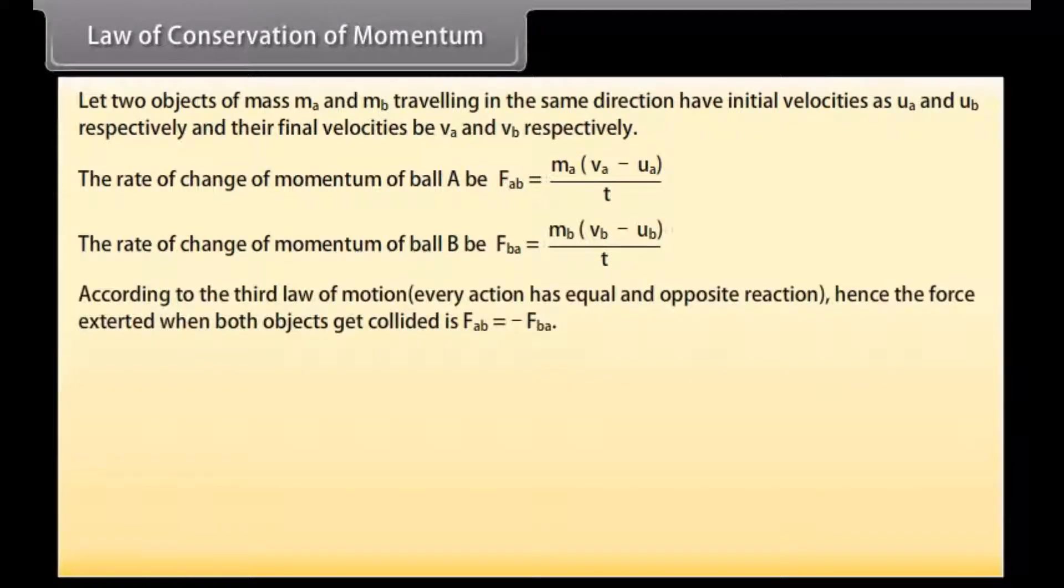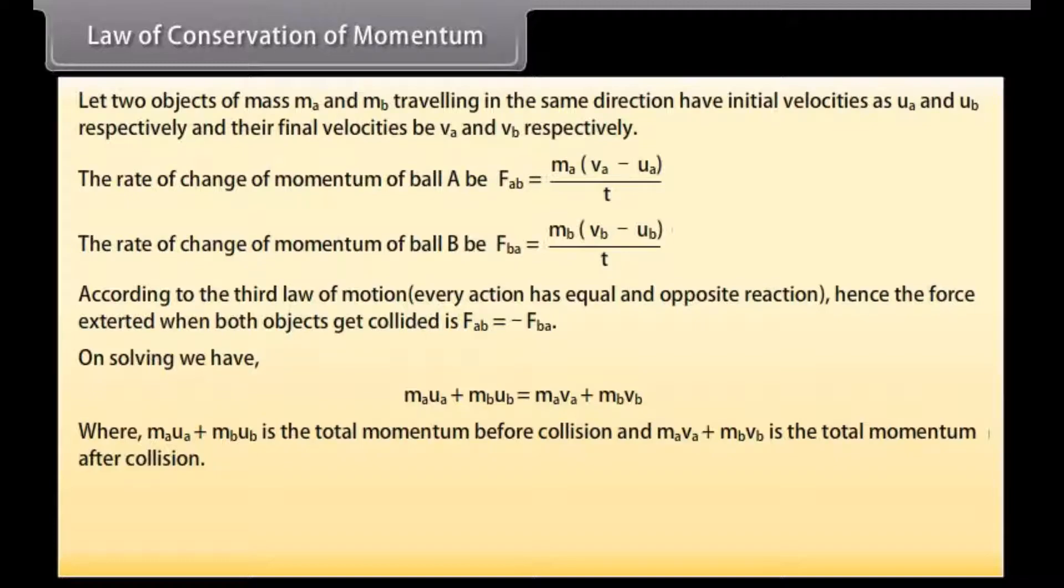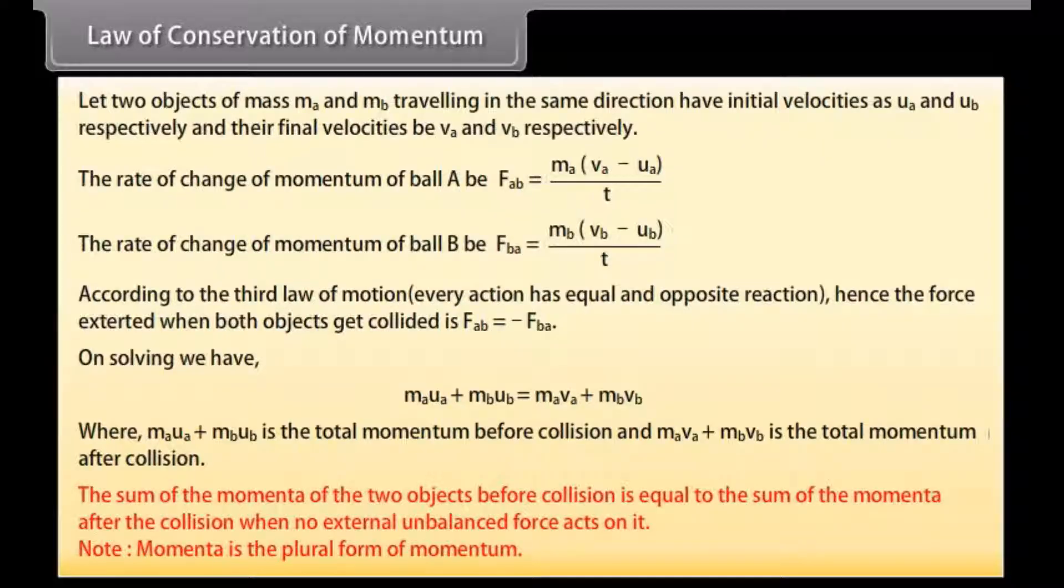According to the third law of motion, every action has equal and opposite reaction. Hence the force exerted when both objects get coiled is F-A-B is equal to minus F-B-A. On solving we have M-A-U-A plus M-B U-B is equal to M-A-V-A plus M-B-V-B, where M-A-U-A plus M-B-U-B is the total momentum before collision and M-A-V-A plus M-B-V-B is the total momentum after collision. The sum of the momenta of the two objects before collision is equal to the sum of the momenta after the collision when no external unbalanced force acts on it. Momenta is the plural form of momentum.